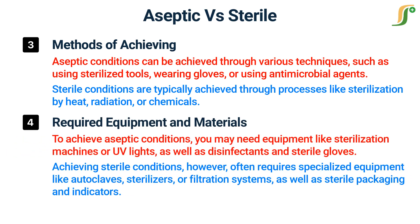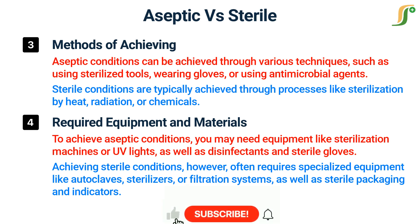Required equipment and materials. To achieve aseptic conditions, you may need equipment like sterilization machines or UV lights, as well as disinfectants and sterile gloves. Achieving sterile conditions, however, often requires specialized equipment like autoclaves, sterilizers, or filtration systems, as well as sterile packaging and indicators.